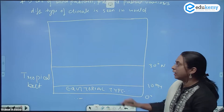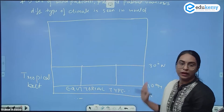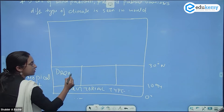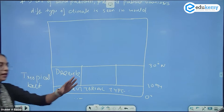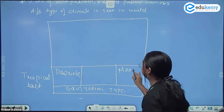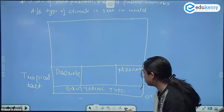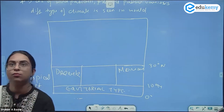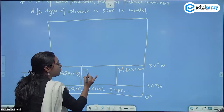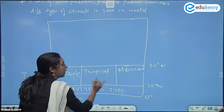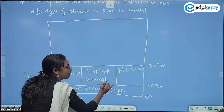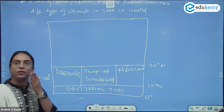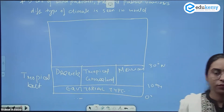On the basis of different types of wind, I can subdivide the tropical belt into three types. On the west side we have deserts, on the east side we have the monsoonal type of climate, and between the deserts and the monsoon we have the tropical grasslands.